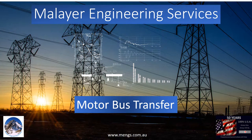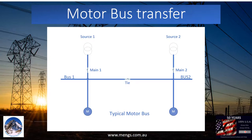In this video, we discuss various types of motor bus transfer. In most industrial applications, to provide higher reliability, any motor bus is supplied from at least two sources of supply. The main-tie-main is the typical configuration for motor buses. Any source of supply plays the role of a redundant source for another side of the bus.